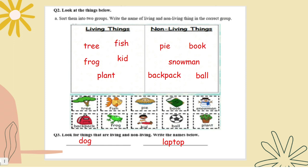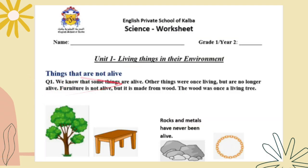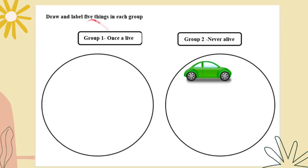Things that are not alive. For question one we know that some things are alive. Other things were once living but are no longer alive. This furniture is not alive but it is made from wood. The wood was once a living tree. Rocks and metals have never been alive.